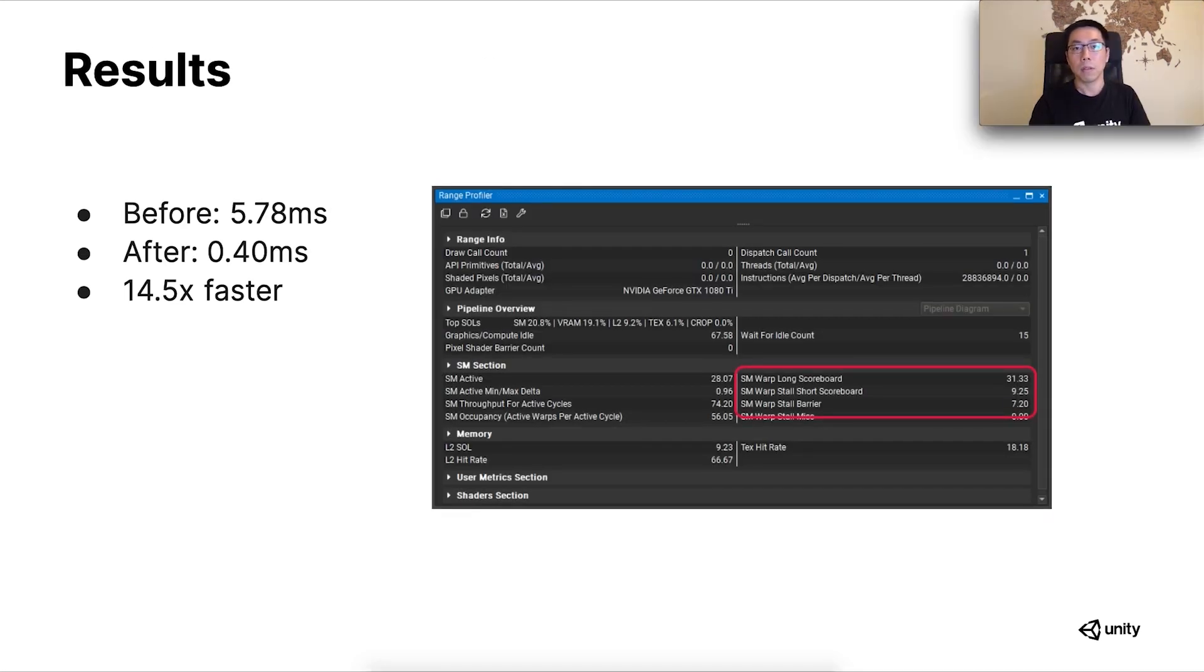The resulting performances are pretty encouraging. We measured a 14.5 times boost on the same hardware. Now it takes less than half a millisecond on a 4-year-old graphics card, making the technique much more viable. You can see in the screenshot that the long scoreboard dependency is much reduced. Instead, the short scoreboard increases as it represents the stall due to the shared memory operations, which is expected.